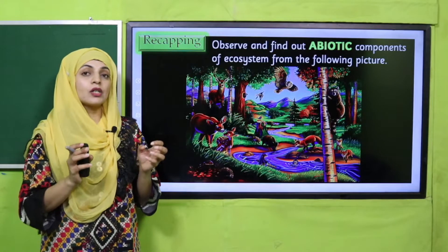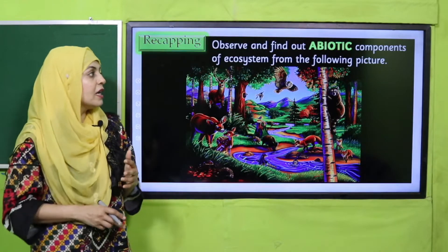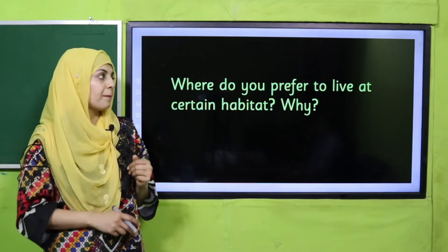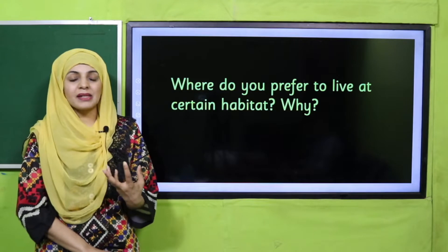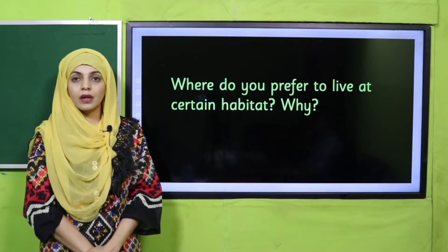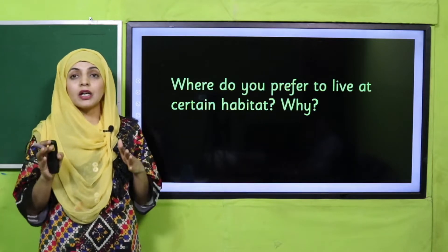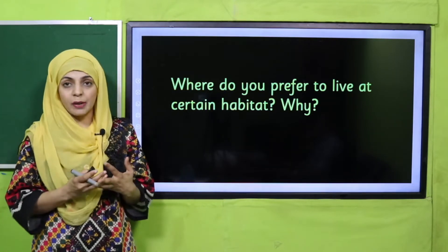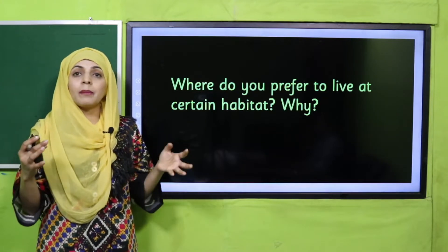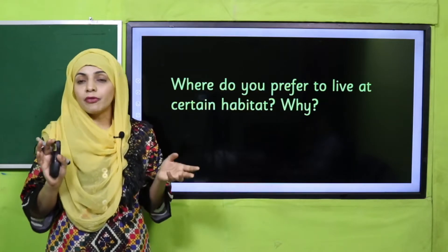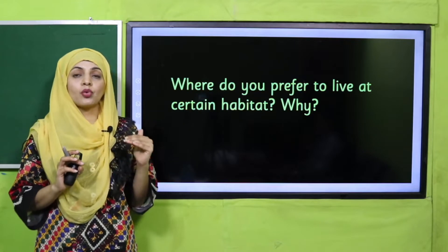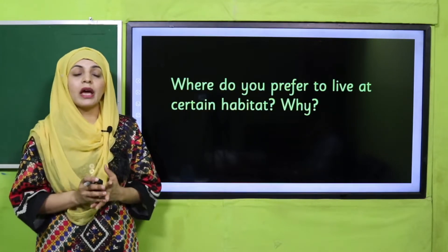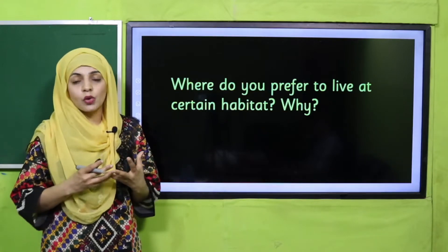Excellent! I hope you have selected all the abiotic factors, which are the non-living components in the picture. Now for brainstorming — where do you prefer to live and why? For example, I prefer that my house is close to the market so all things are readily available to me and I don't have to travel far for necessities. My home needs fans and electricity for a comfortable life. Similarly, all living things select a habitat or portion of a habitat where they feel comfortable and secure.